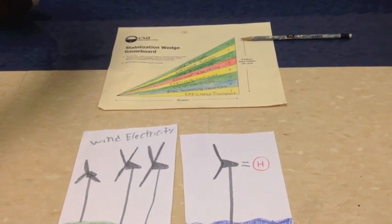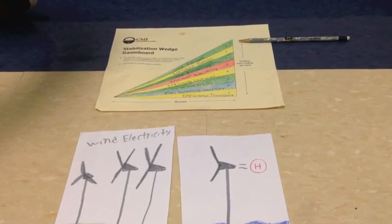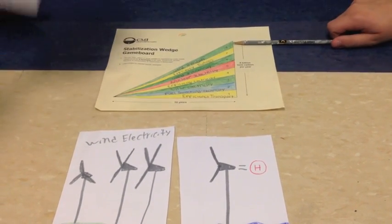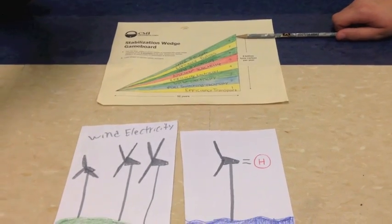This wedge, however, is expensive with three dollar signs. We picked this wedge because one wedge could come from powering half the world's cars projected for 2015 with hydrogen.